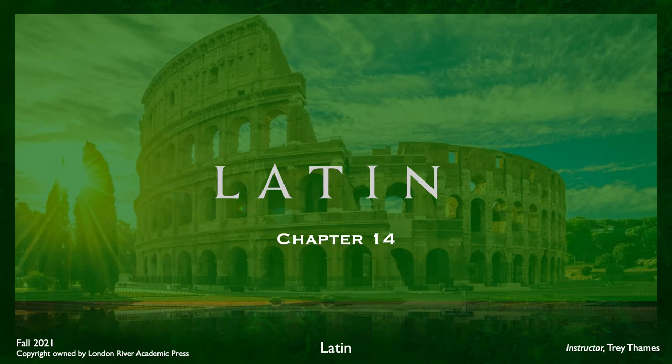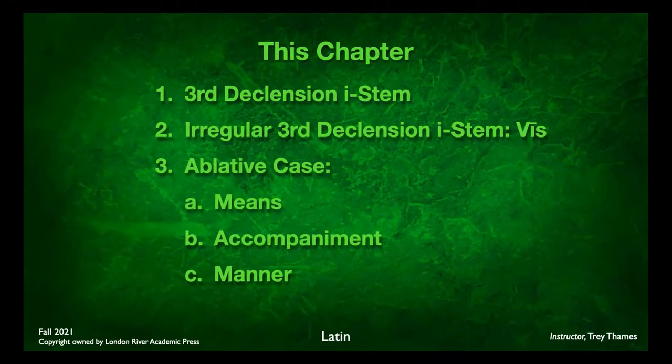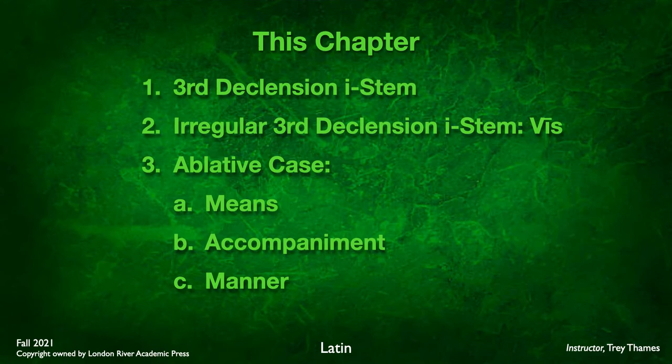Welcome to Wheelock's Latin Chapter 14. In this chapter, we're going to be looking at the third declension I-stem, irregular third declension I-stem, the noun vis, and various uses of the ablative case, including ablative of means, ablative of accompaniment, and ablative of manner.